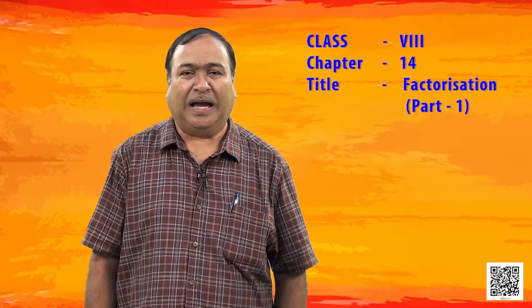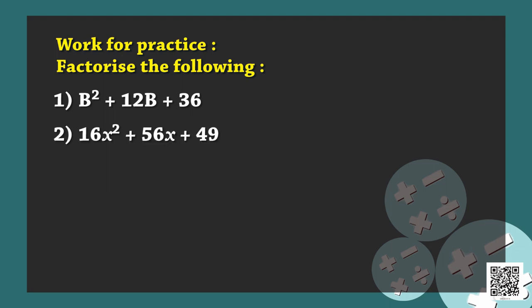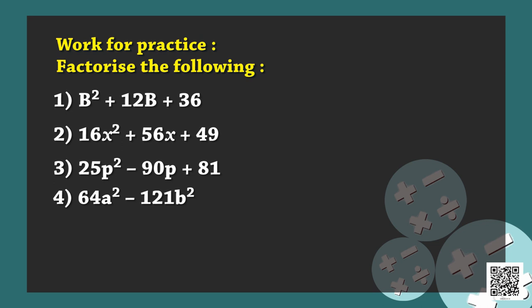For your practice, I am giving some more problems. Work for practice — factorize the following: (1) B squared plus 12B plus 36; (2) 16X squared plus 56X plus 49; (3) 25P squared minus 90P plus 81; (4) 64P squared minus 121B squared.